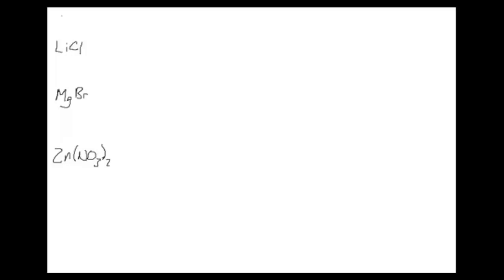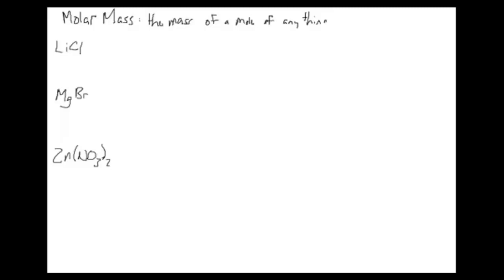In this podcast we're going to look at the idea of molar mass. Molar mass is just what it sounds like — there's nothing tricky here. We've talked about moles in class already, and a mole is always 6.02 times 10 to the 23rd of something. So molar mass is simply the mass of a mole of something. We could have a mole of shoes — 6.02 times 10 to the 23rd shoes — probably more shoes than exist on Earth.